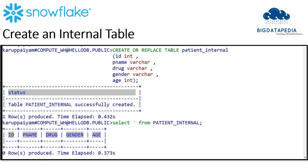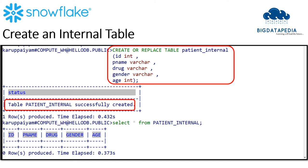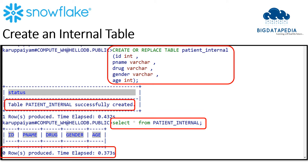Let me start by creating an internal table in SnowSQL. The internal table creation looks like a normal SQL command: 'CREATE OR REPLACE TABLE', then the table name, and you declare the column names with their data types. Once a table is created successfully, you will get a popup in the result tab. Notice we just created a table and did not insert any records, so the outcome will show zero rows.